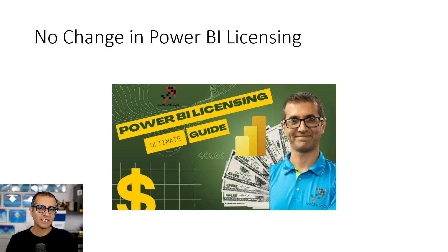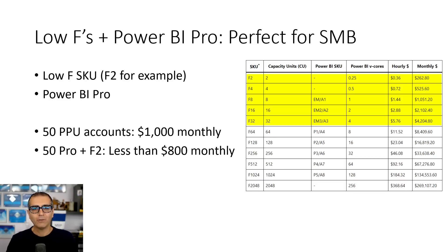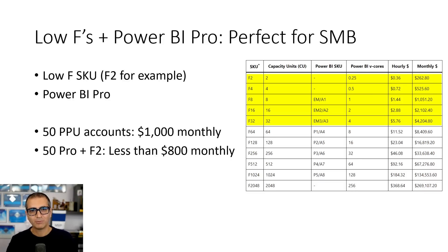One really interesting scenario in Fabric is using one of the low F SKUs with a Pro Power BI account. A Pro Power BI account gives you the ability to share content. A low F SKU gives you the ability to use all Microsoft Fabric objects — you can create a data warehouse, data pipeline, lakehouse, use the data science workload, and have Power BI with Direct Lake to these resources. All of these are available with a low F SKU such as F2. Combined with Pro, you have Power BI sharing and Fabric together.